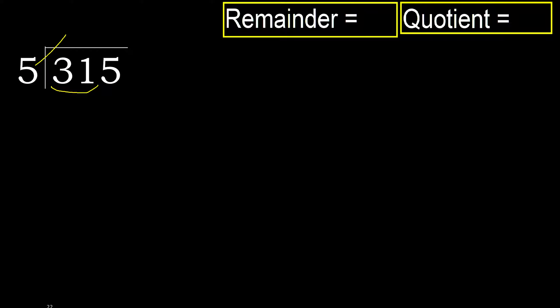5 multiplied by which number is nearest to 31 but not greater? 5 multiplied by 7 is 35, which is greater. 5 multiplied by 6 is 30, which is not greater. Ok. 31 minus 30 is 1, next.